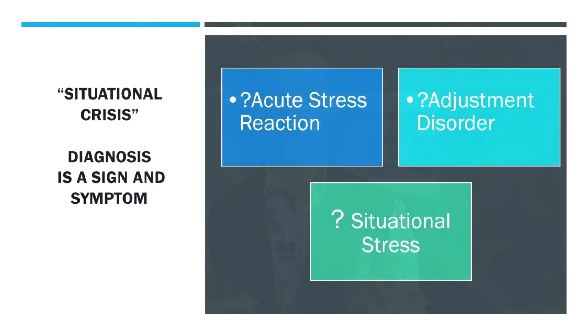Let's talk about situational crises. Similar to how in geriatrics we talked about terminology like functional decline and acopia being symptoms or signs rather than diagnostic terms, some people present to hospital because they're having a decompensation or exacerbation of an underlying mental health issue, but it often gets termed a situational crisis because there's some event or change in circumstances that resulted in their admission. Situational crisis doesn't code very well at all — it's more of a symptom or sign. What we really want to use is terminology like acute stress reaction, adjustment disorder, a situational stressor, or to say it's a manifestation or exacerbation of their underlying mental health condition.